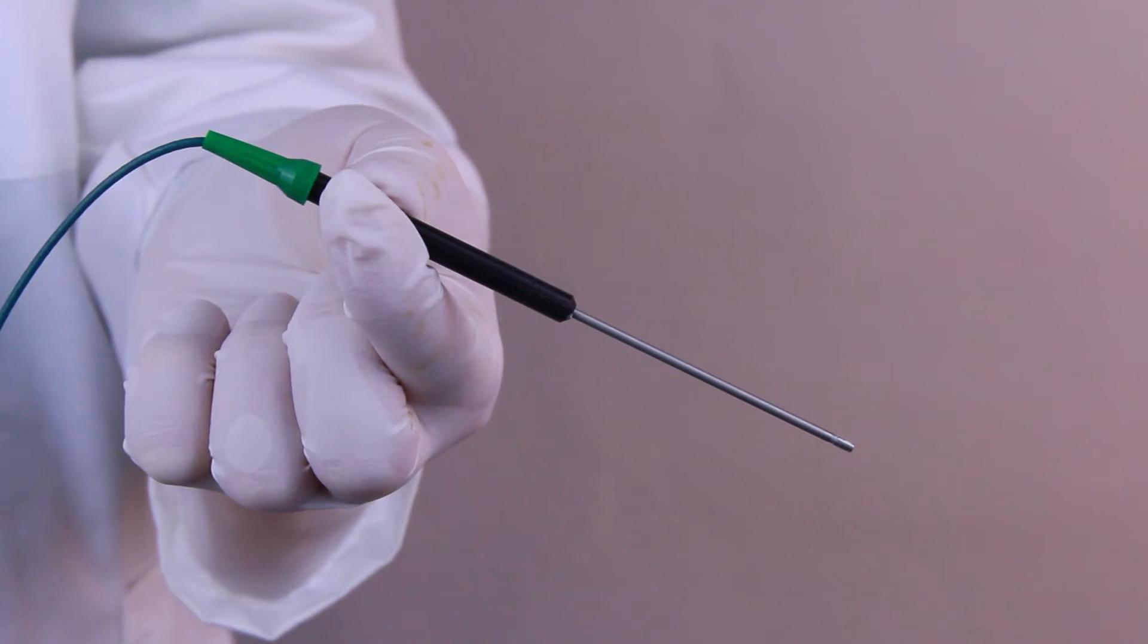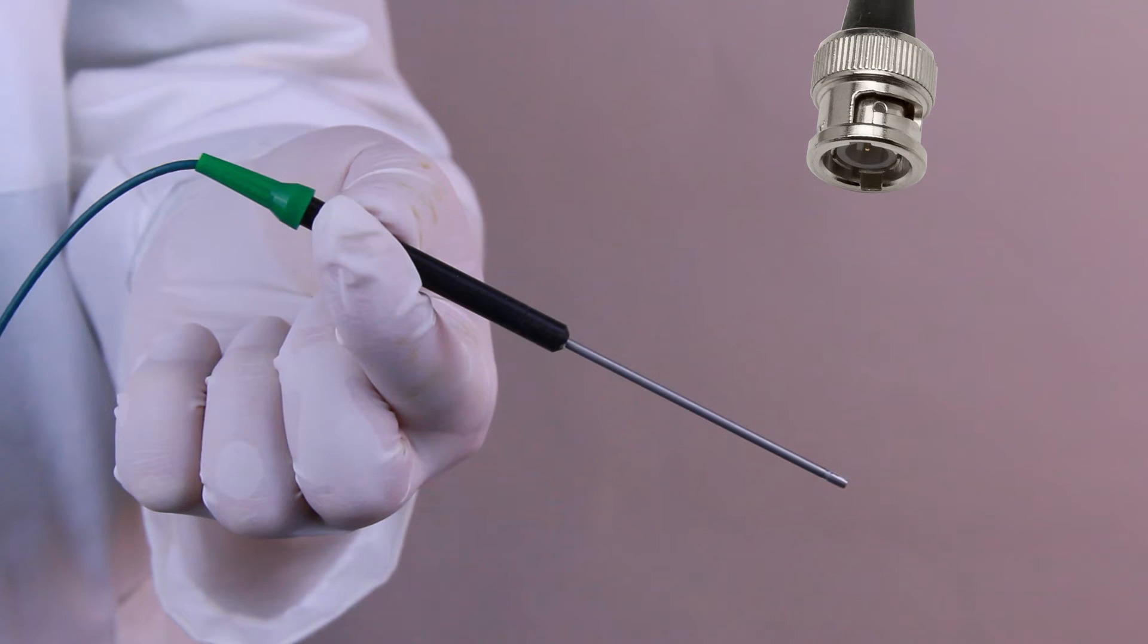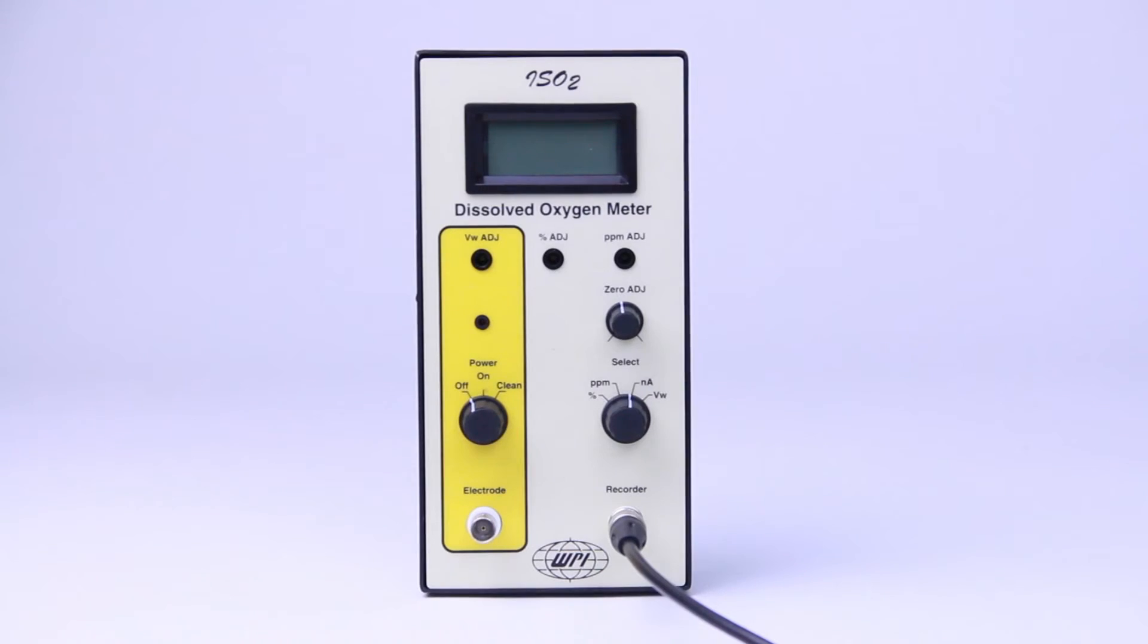The OxLP sensor is functionally identical to the iso-oxy-2, but has a different connector because it plugs into a different meter, WPI's iso-2 dissolved oxygen meter.